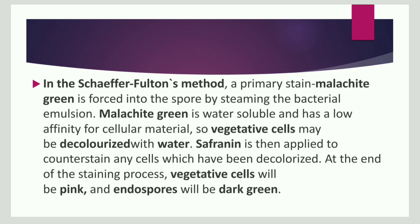In the Schaeffer-Fulton method, the primary stain used is malachite green. Malachite green is water soluble and has a lower affinity towards cellular material. The decolorizing agent used is water. When the decolorizing agent is applied, the vegetative cells lose their color. The counterstain used is safranin, which stains vegetative cells pink. The result is that vegetative cells appear pink and endospores appear green.